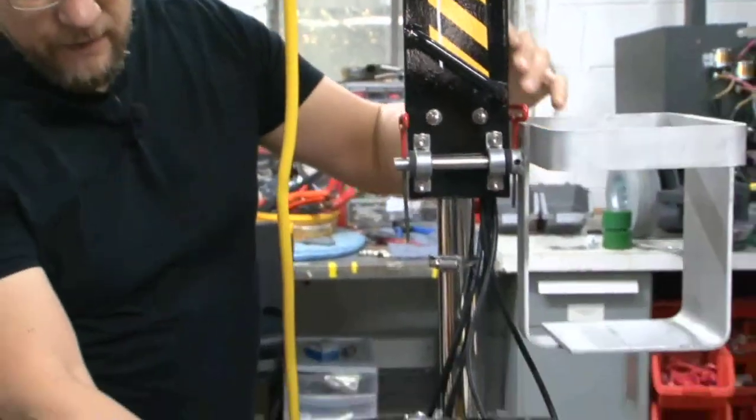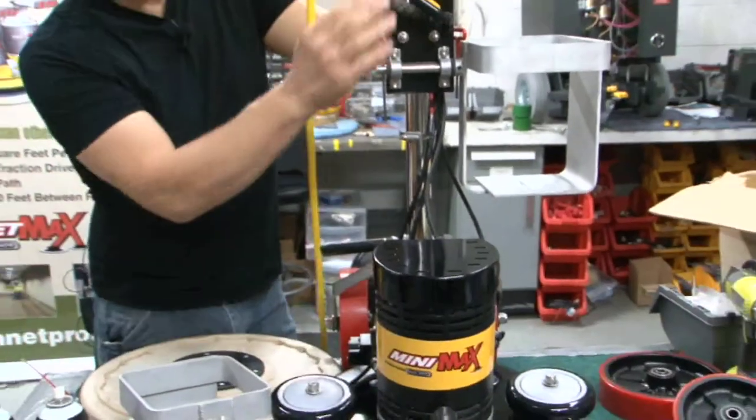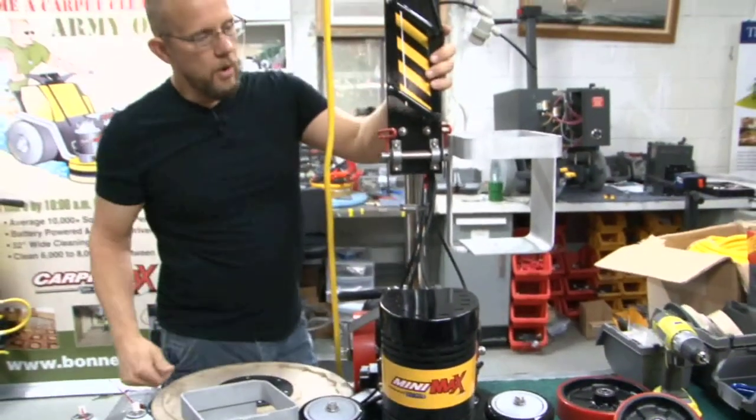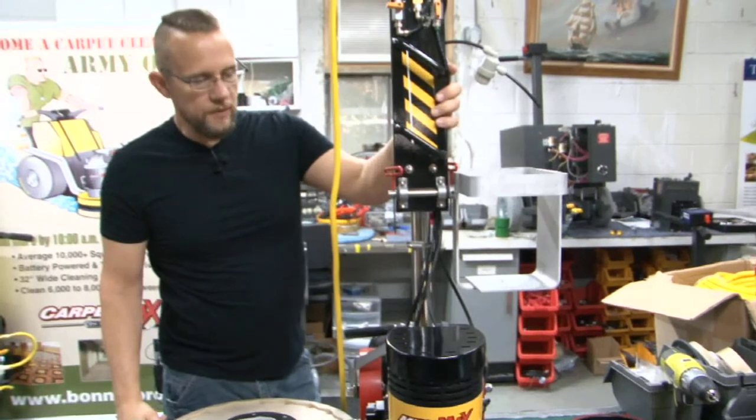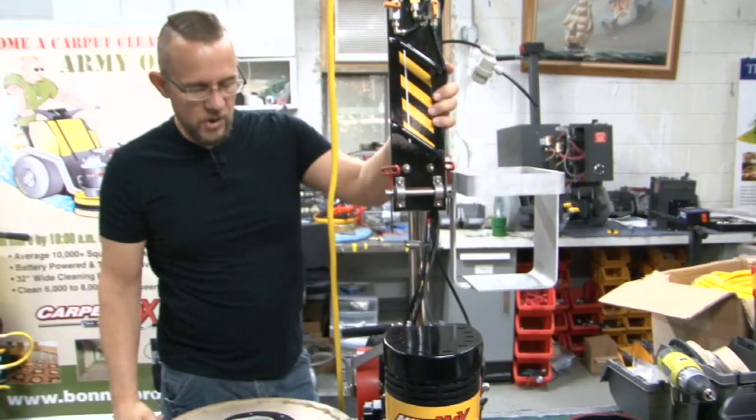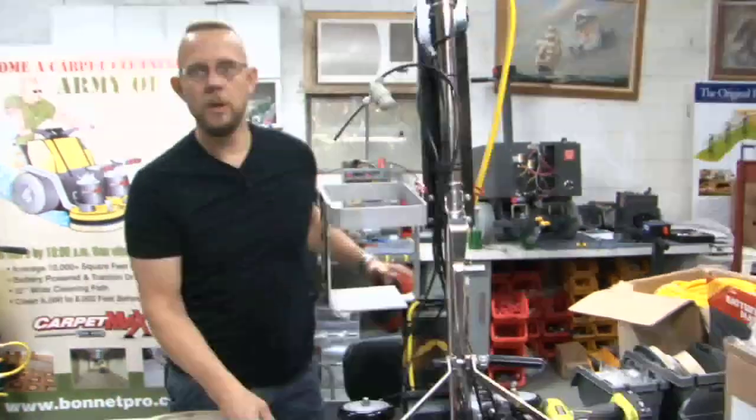You'll also notice you have lift handles, two on the chassis and two on your main handle tube, for convenience when moving your machine from point A to point B.